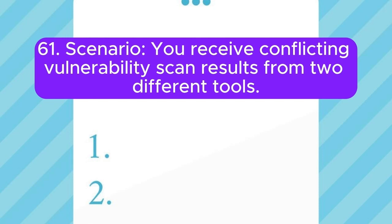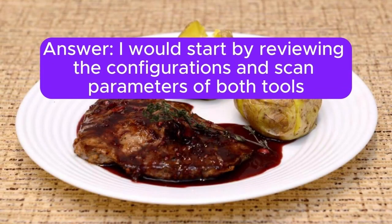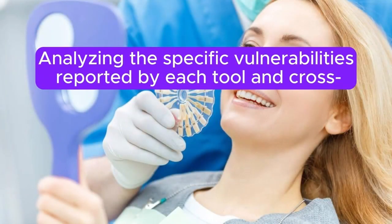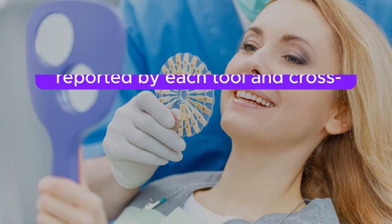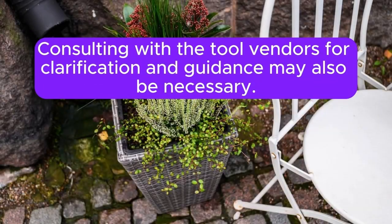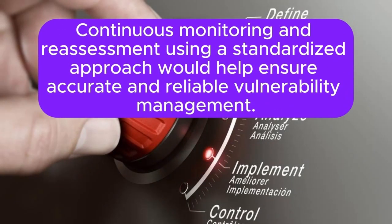Scenario 61: You receive conflicting vulnerability scan results from two different tools. How do you proceed? I would start by reviewing the configurations and scan parameters of both tools to ensure they are set up correctly and consistently. Analyzing the specific vulnerabilities reported by each tool and cross-referencing with known vulnerability databases can help determine their accuracy. Consulting with the tool vendors for clarification and guidance may also be necessary. Prioritizing remediation based on the criticality of the reported vulnerabilities and potential impact is essential. Continuous monitoring and reassessment using a standardized approach would help ensure accurate and reliable vulnerability management.